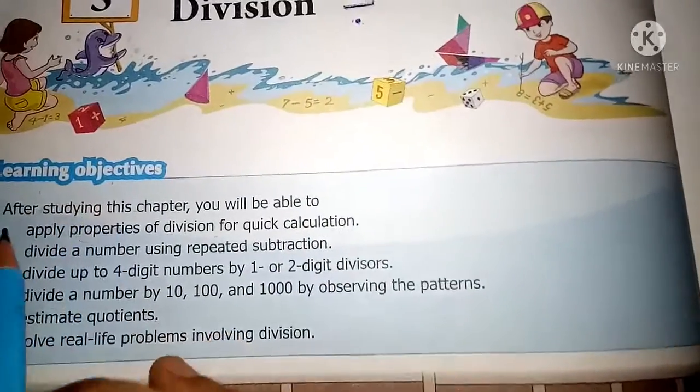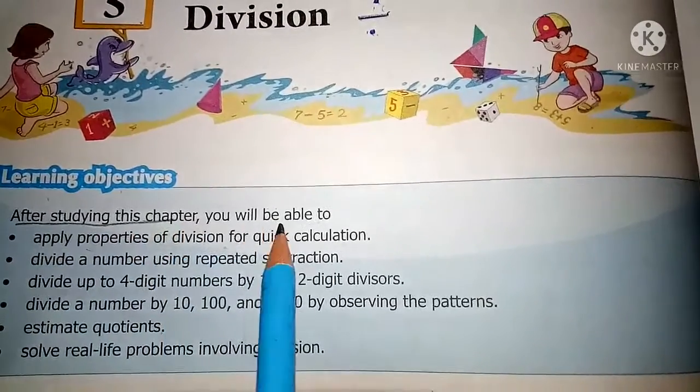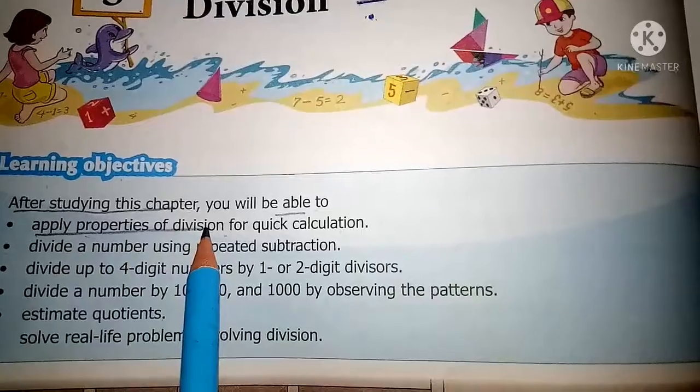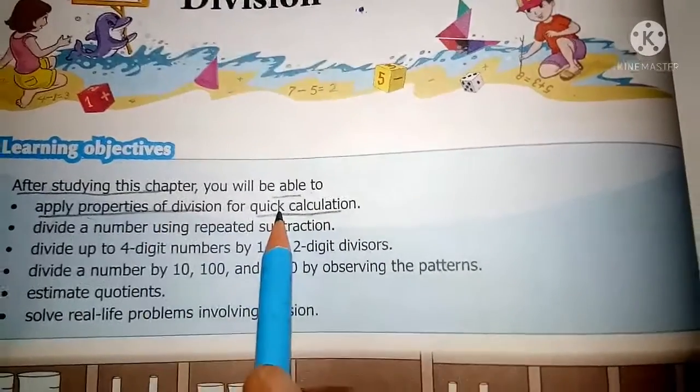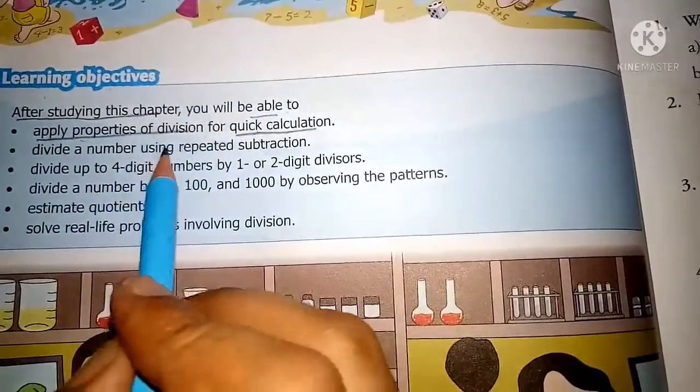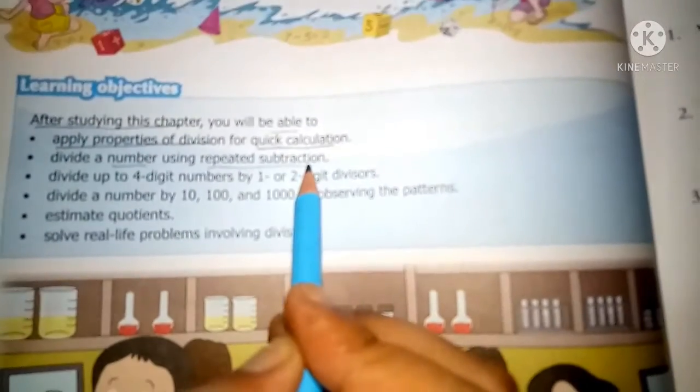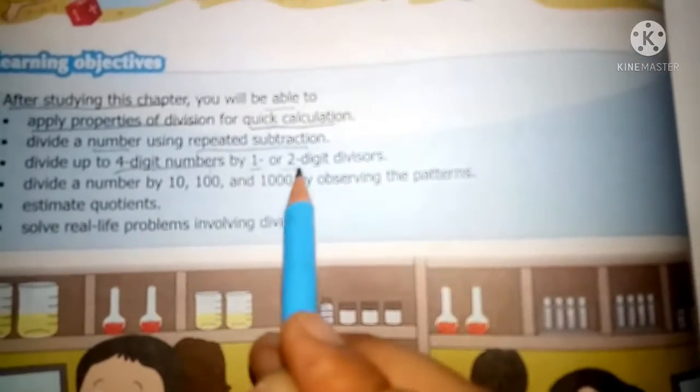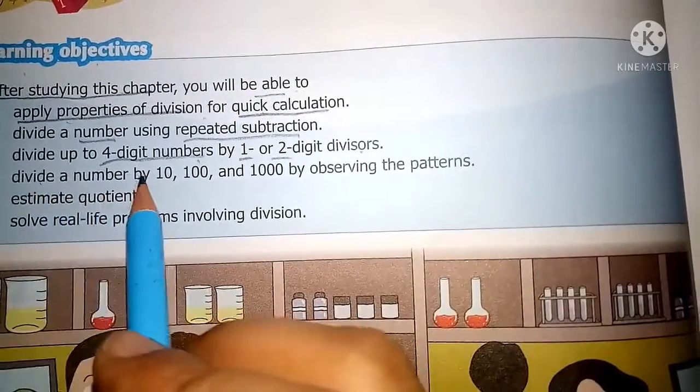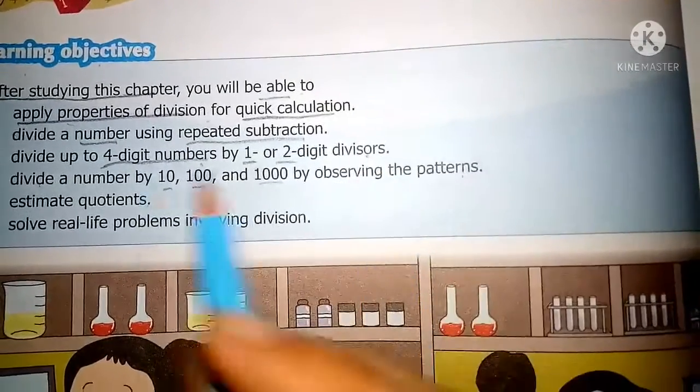Learning objectives: After studying this chapter you will be able to apply property of division for quick calculation, divide a number using repeated subtraction, divide up to four digit numbers by one or two digit divisor, divide a number by 10, 100, and 1000 by observing the pattern, and solve real life problems involving division.